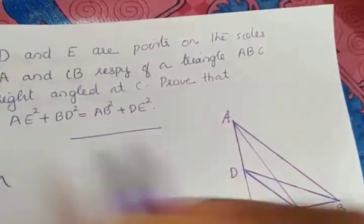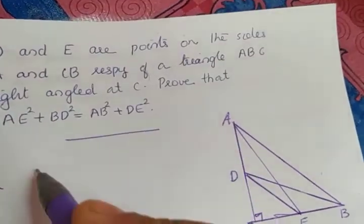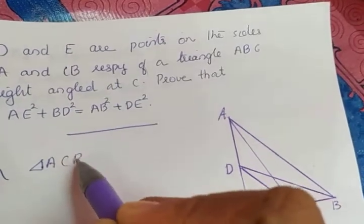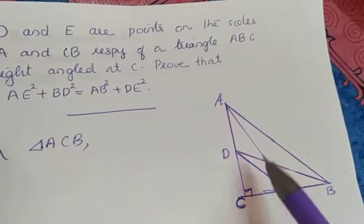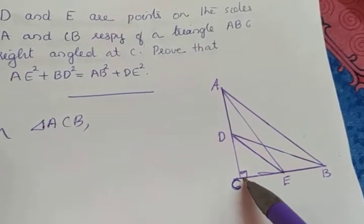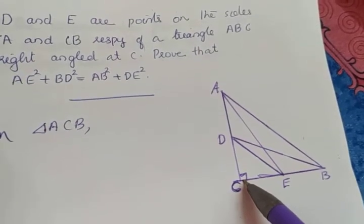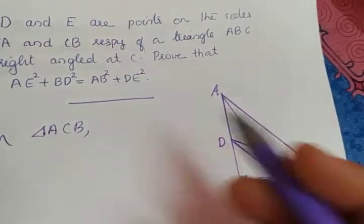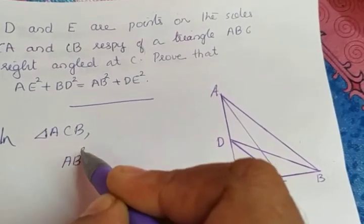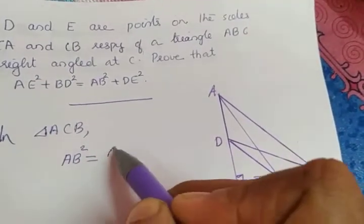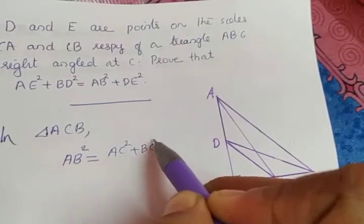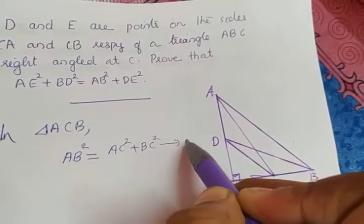In triangle ACB, angle C is 90 degrees, so the hypotenuse is AB. Applying Pythagoras theorem: AB square is equal to AC square plus BC square. Let that be equation number 1.